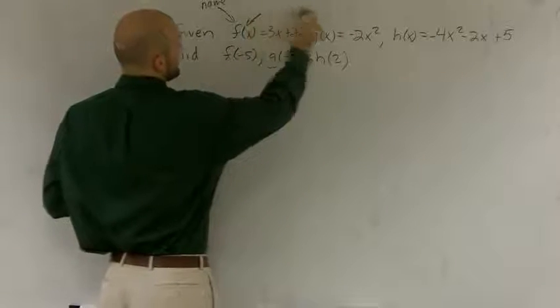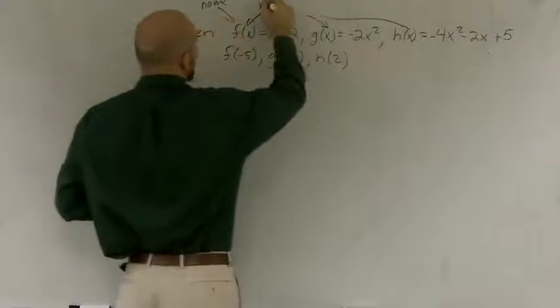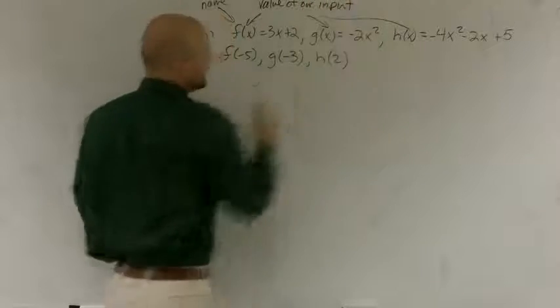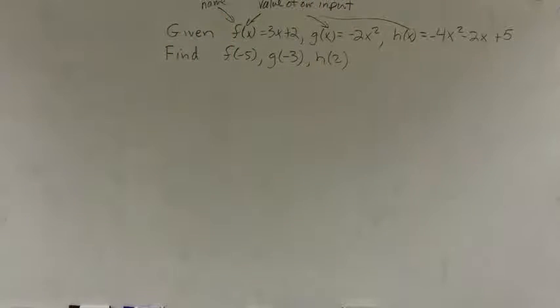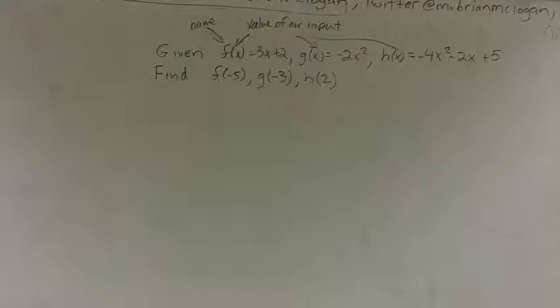Then these little x's right here, what these represent is the value of our input. I don't think that's even showing up. Maybe just a little bit. So those represent the value of the input, alright?